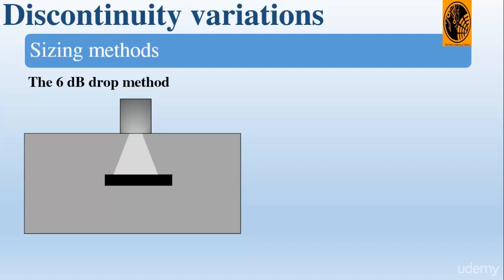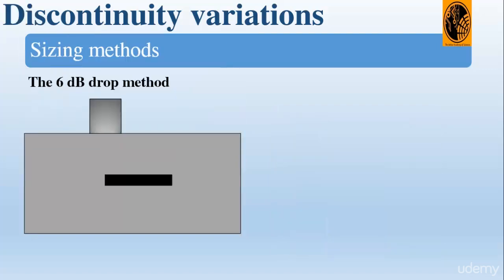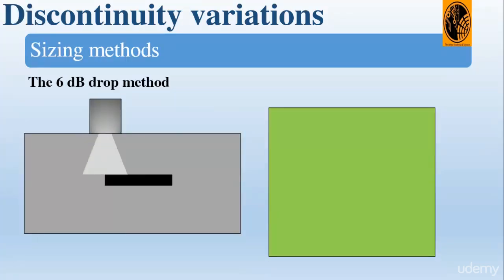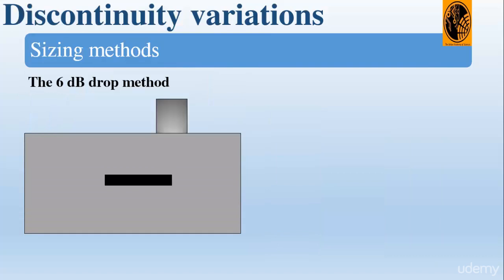As you can see on the screen, we have the sound beam directed to the reflector and we get the maximum signal at full screen height. If we move the probe until the amplitude of the signal drops by 50%, we can say that the edge of the reflector is on the center line of the beam. We do the same from the other side to determine the full extent of the reflector.